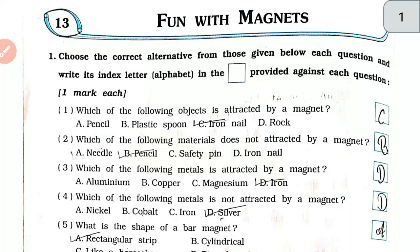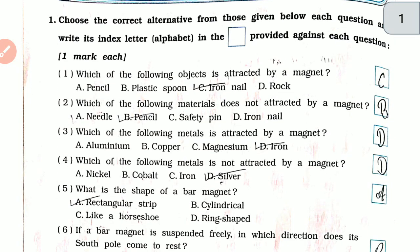Question 1. Choose the correct alternative from those given below. Each question and write its index letter — the alphabet — in the box provided against each question.